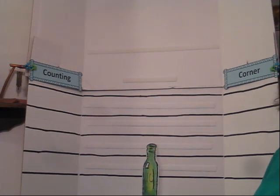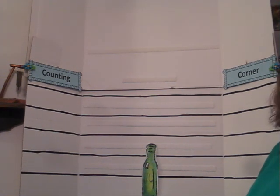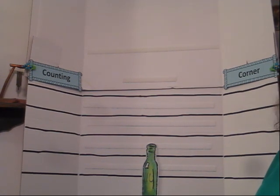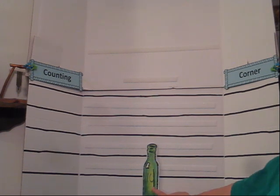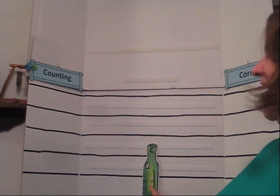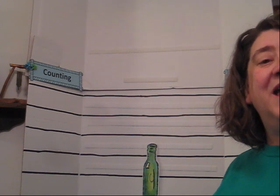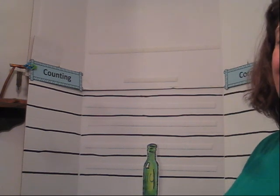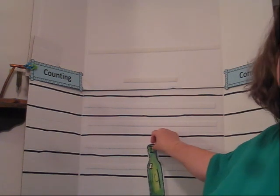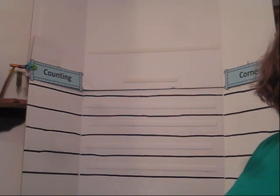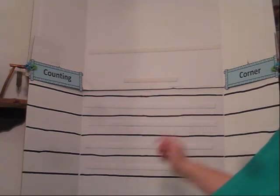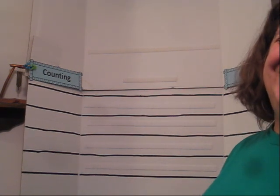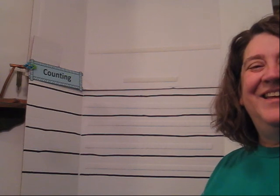30 green bottles are hanging on the wall, and if 20 of those bottles should accidentally fall, how many green bottles are hanging on the wall? 10! There are 10 green bottles hanging on the wall, and if 10 of those bottles should accidentally fall, there'll be zero green bottles hanging on the wall. Nice job doing subtraction starting from 100 today!